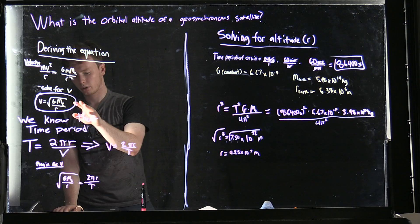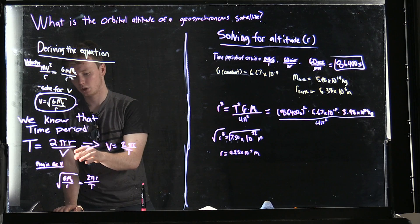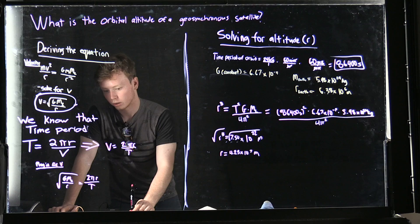Then we're going to take that equation earlier that we derived and we're going to plug that in for V. You get square root of GM_E over R is equal to 2πr over T.